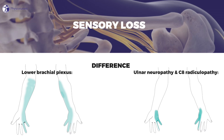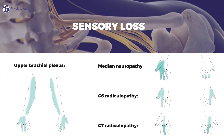In ulnar neuropathy and radiculopathy of C8, sensory loss will also be limited to the hand and not present in the medial forearm. The sensory axons in the upper brachial plexus supply the medial side of the upper arm, forearm, and the radial three digits. In median nerve entrapment, only the hand with the radial three and a half digits shows decreased sensation, while cervical radiculopathy of C6 results in diminished sensation of the thumb and index finger, and cervical radiculopathy of C7 only affects the middle finger.